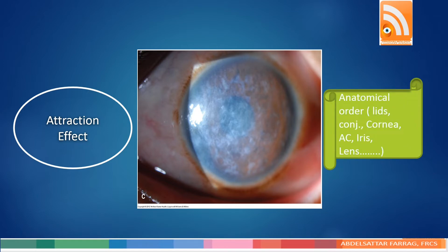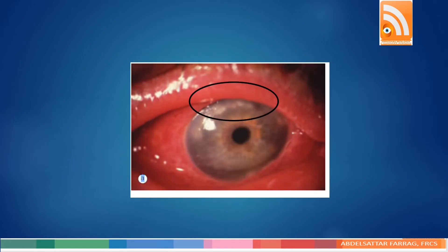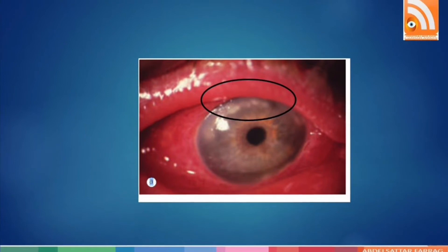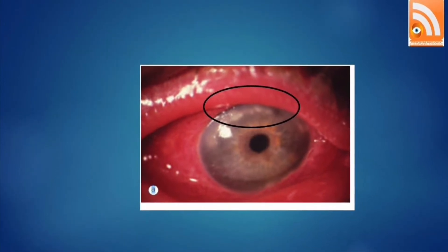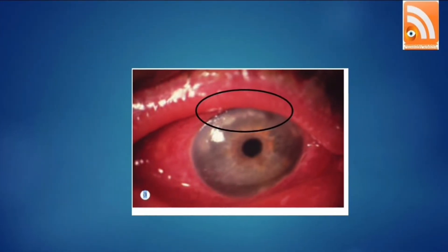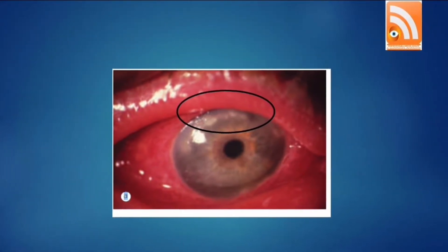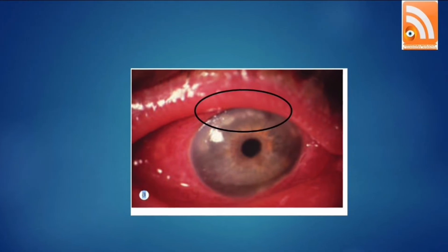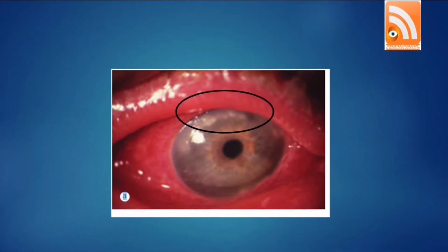By doing so, you miss other anterior segment structures which may show other important signs. You need to follow an anatomical description: start with lids, conjunctiva, cornea, anterior chamber, iris, and lens. If you don't follow a systematic descriptive approach in every case, you will miss critical findings — like in this photo, where the clue is blepharitis causing marginal keratitis. This is important even in everyday practice.